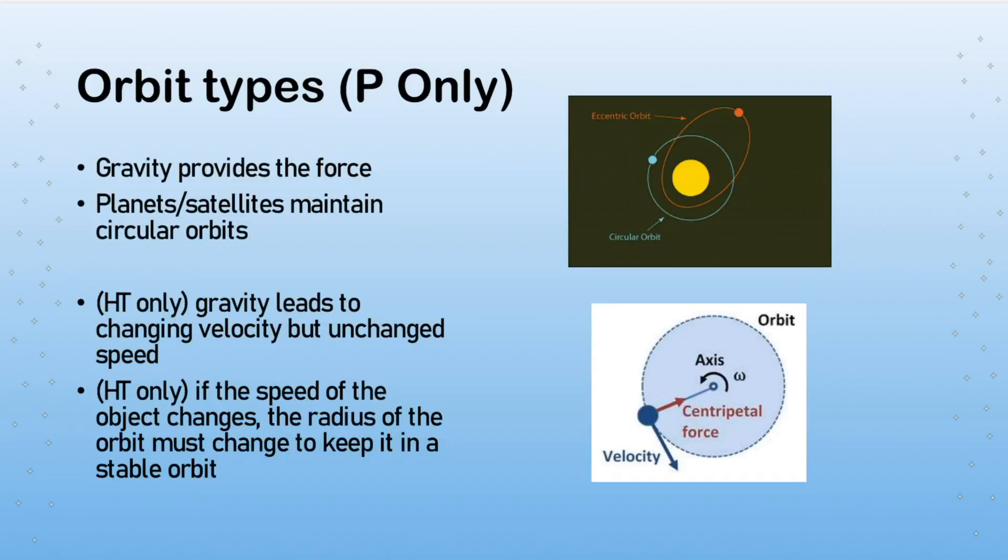The next question is how do these objects stay in orbit. Well, first up we need to have gravity. Gravity provides the force that's going to cause them to keep accelerating towards the center of the solar system or the thing that they're orbiting. Planets and satellites maintain pretty much circular orbits - it's not necessarily true but that's what we should be able to say. The circular part is important because it allows us to explore how forces and acceleration and velocity work. It's a nice way to look at the difference between the term speed and velocity, because of course velocity has a direction but speed does not.